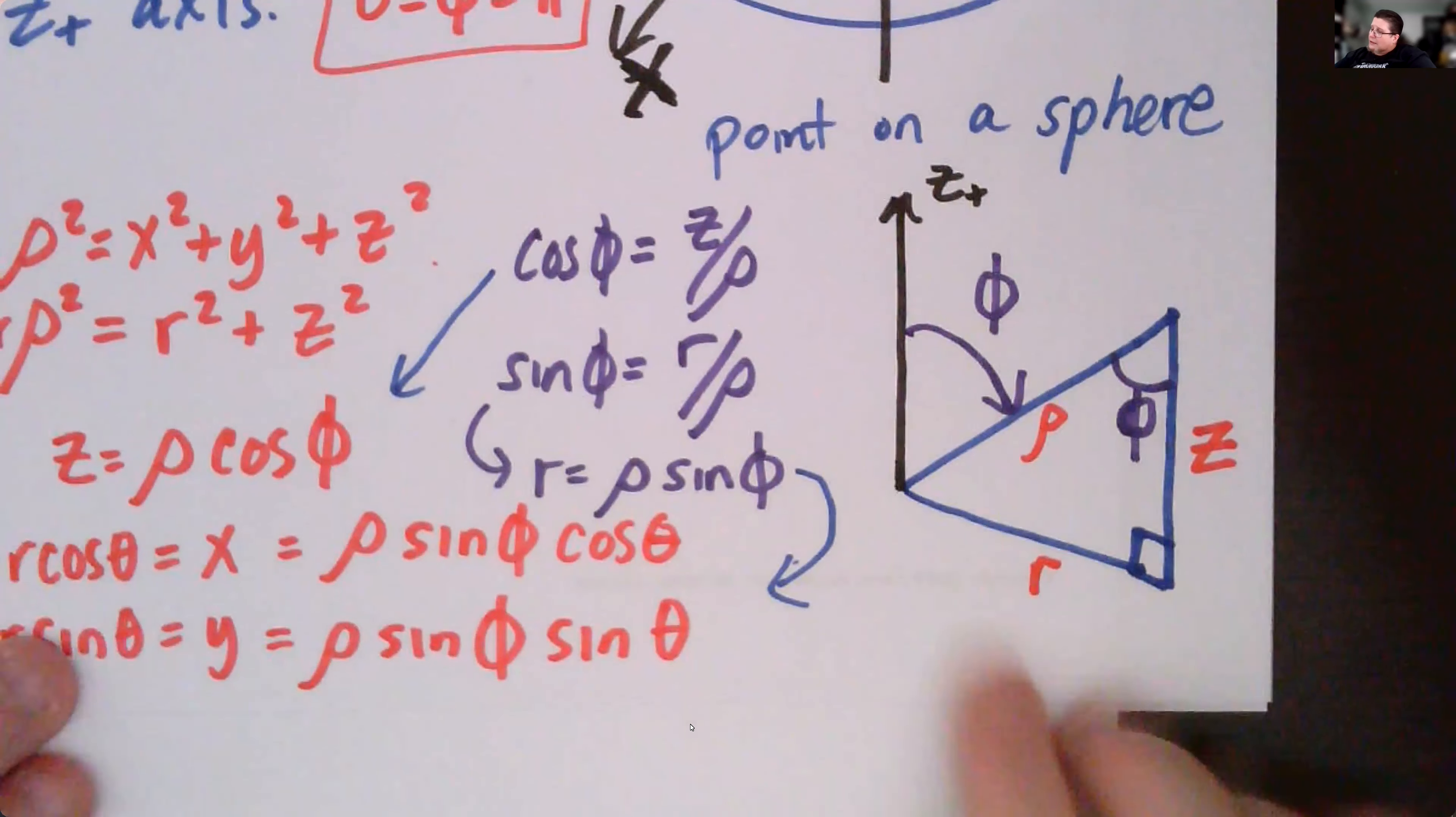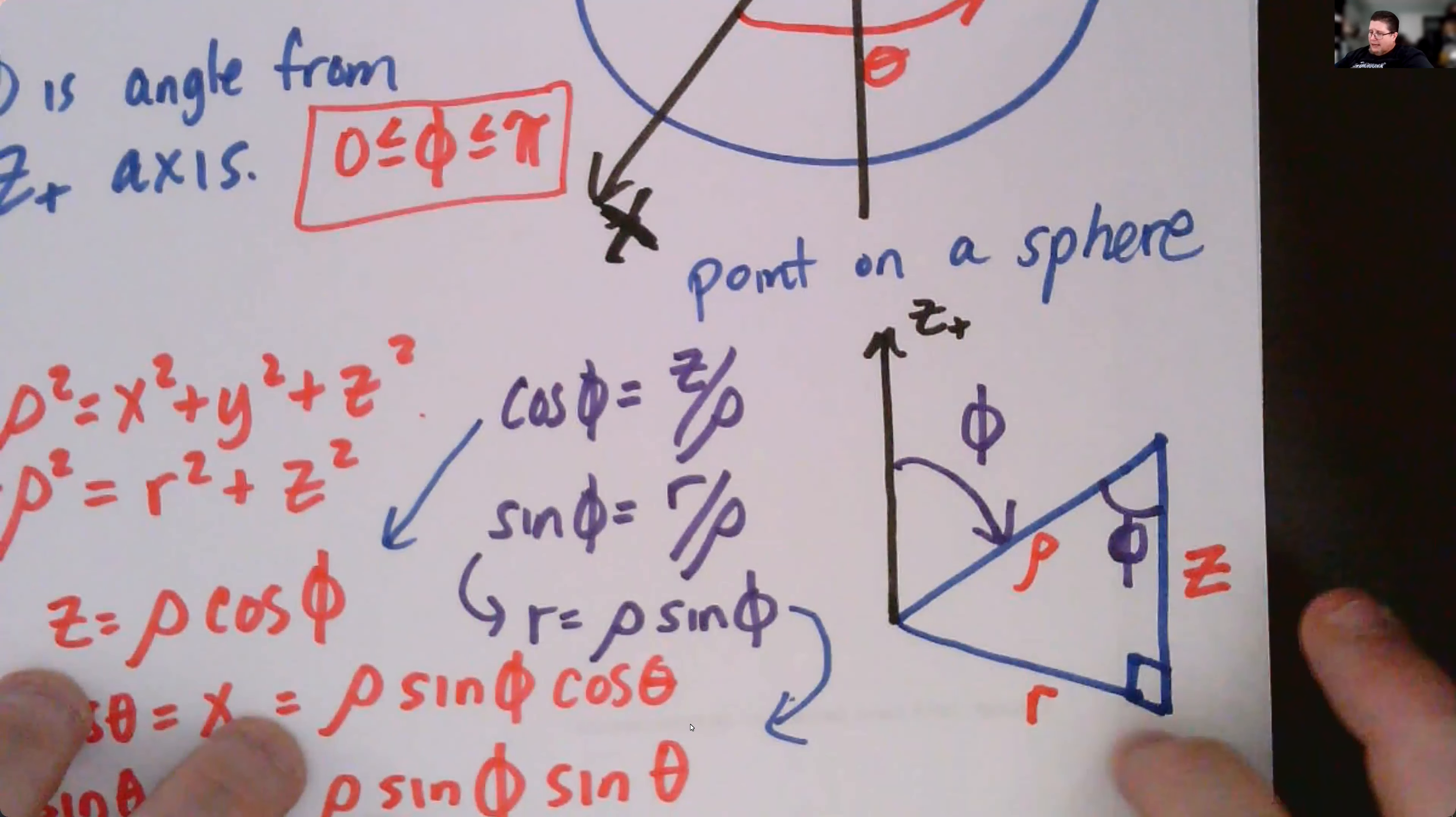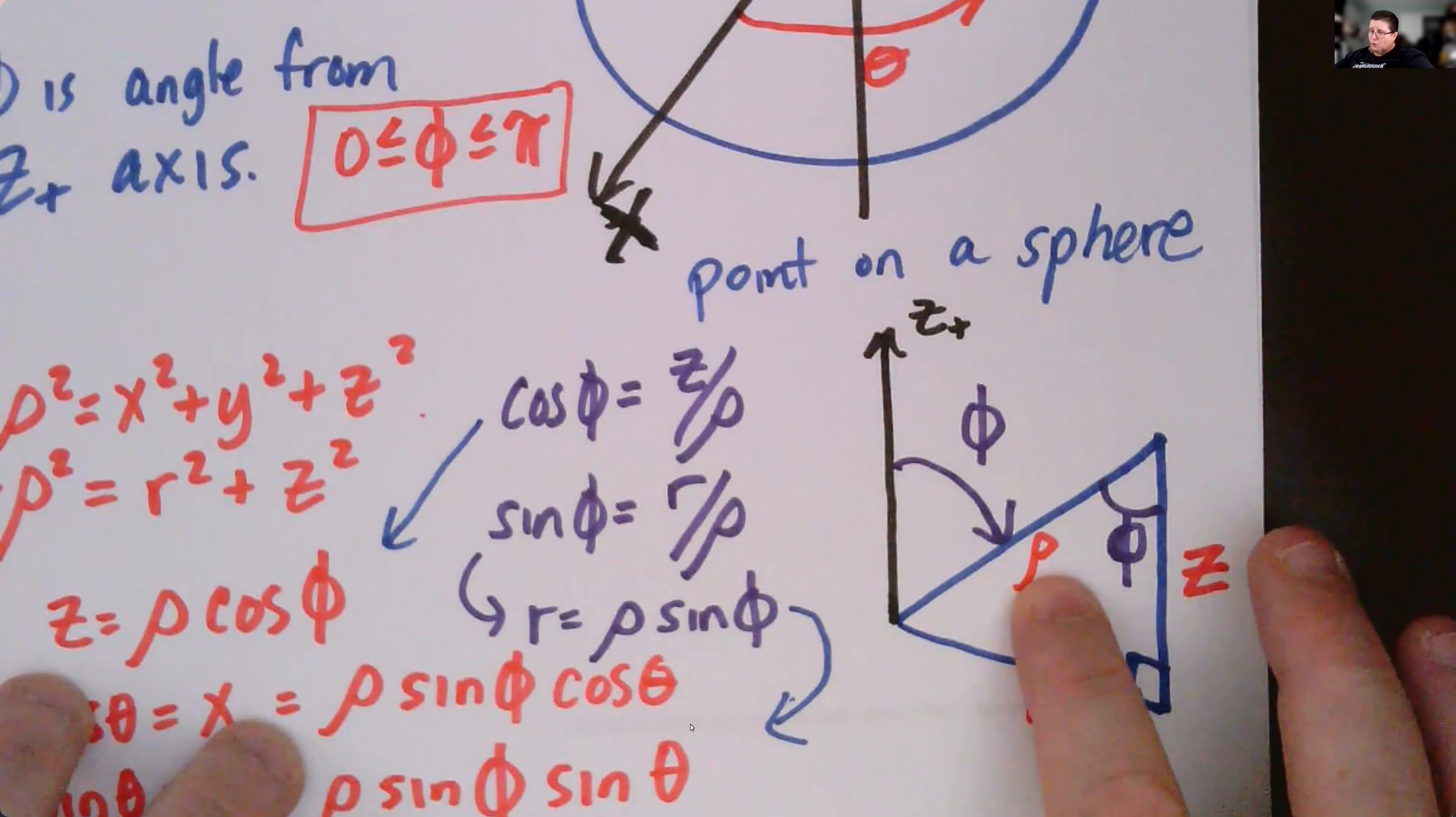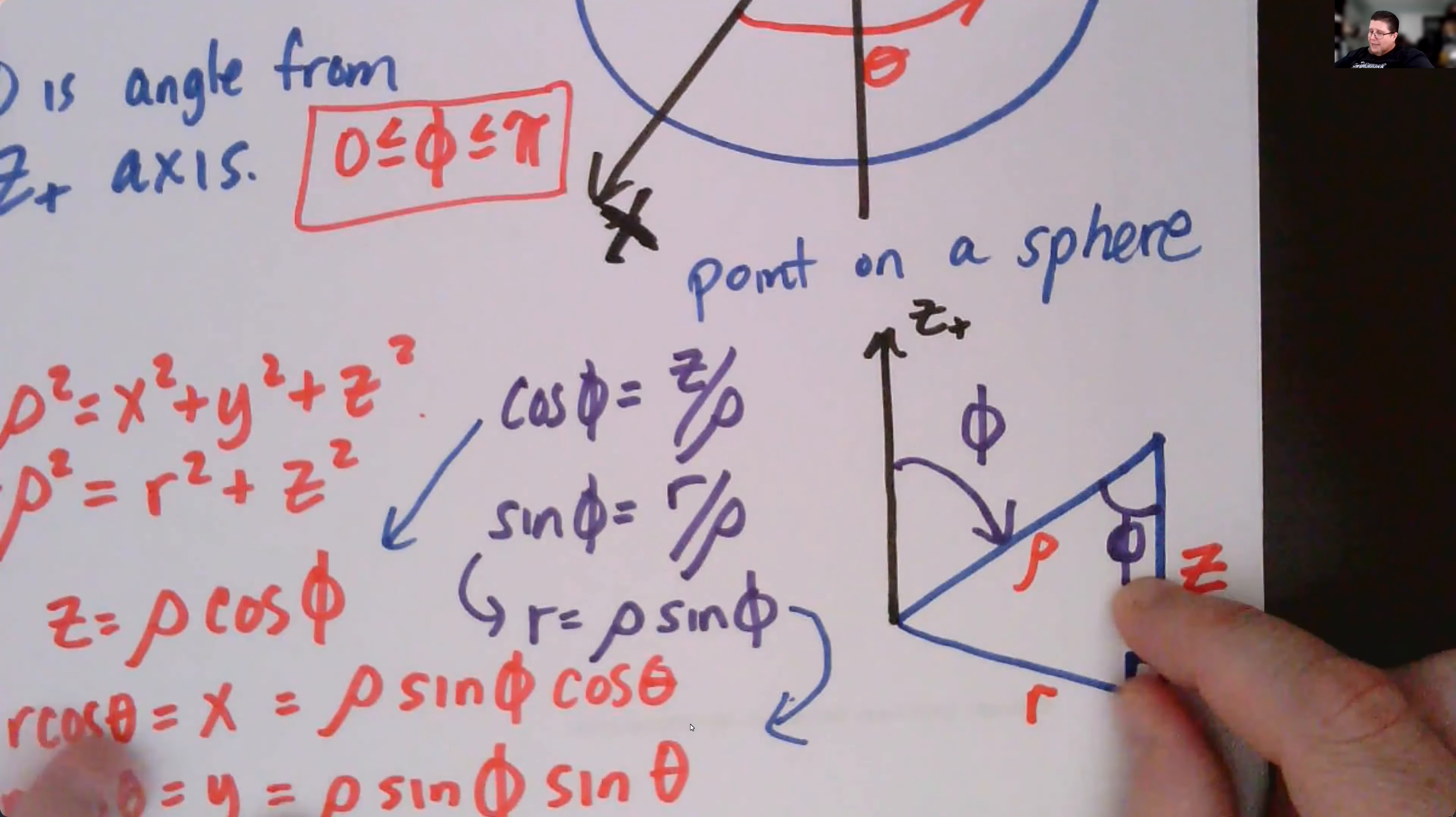So another way of looking at it, that triangle is right here. If we look at this, the theta we already know, we've got this triangle. I'm redrawing this triangle right here. The angle between r and z makes a right angle. This angle coming off of the z-axis down to our radius rho to the edge of the sphere is there.